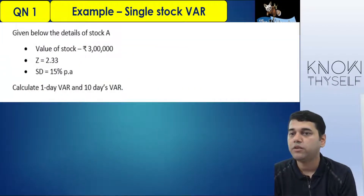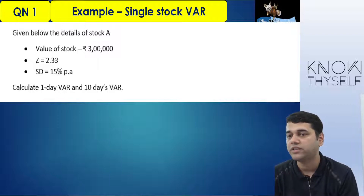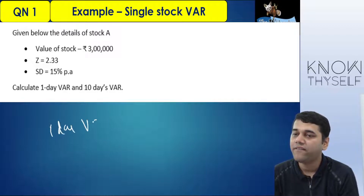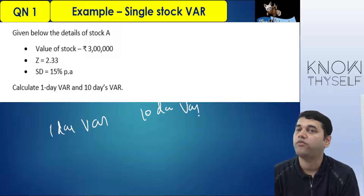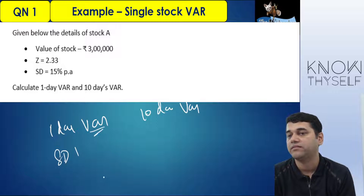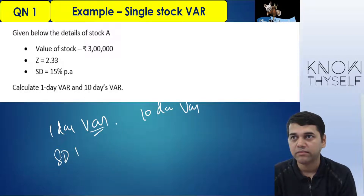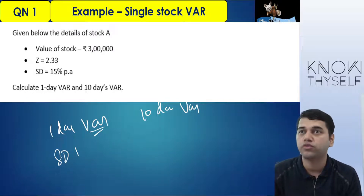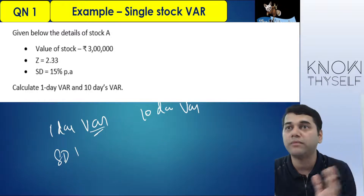Question number 1: Given below the details of stock A. Value of the stock is 3,00,000, Z is 2.33, standard deviation is 30%. What is 1-day VAR and 10-day VAR? To find out 1-day VAR, I need the standard deviation for 1 day. I need 1-day standard deviation. In 1 day, how much might I lose? Or in 10 days, how much might I lose? I cannot apply 15% per annum directly.